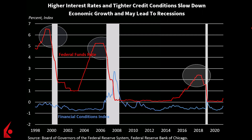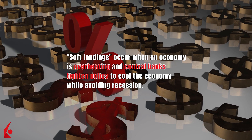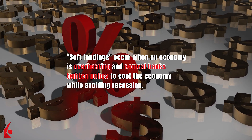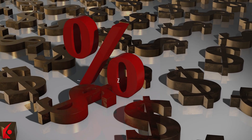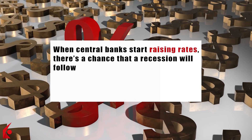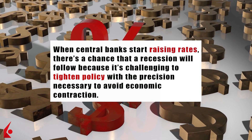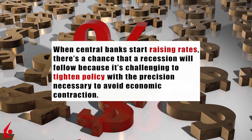In general, higher interest rates and tighter credit conditions slow down economic growth and may lead to recessions. Historically speaking, central banks have had plenty of difficulty attempting to engineer soft landings. Soft landings occur when an economy is overheating and central banks tighten policy to cool the economy while avoiding recession. When central banks start raising rates, there's a chance that a recession will follow because it's challenging to tighten policy with the precision necessary to avoid economic contraction.